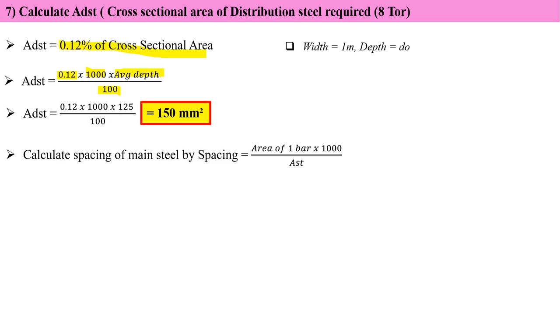Now calculate the spacing. Formula is area for one bar multiplied by 1000 divided by Ast distribution. Area for one 8 mm bar is 50.3. Putting the value, I get 335.33. We need to take it on the lower side, so 335 mm center to center.